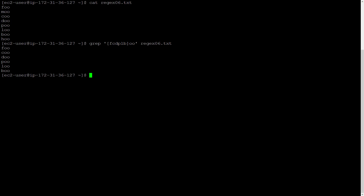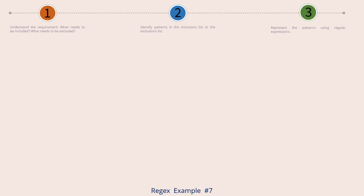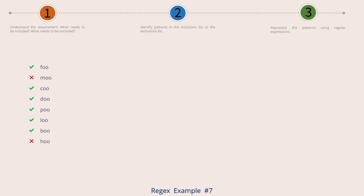Let's move on to the next one. Let's look at example number 7 now. Here is our input file. The input file is exactly the same as the input file we used for example number 6. The strings with the green check mark on the left are the strings that I want to select. Let's look out for patterns which make the green ones differ from the red ones. You'll notice that all the words end in oo. We have more green ones: foo, coo, doo.